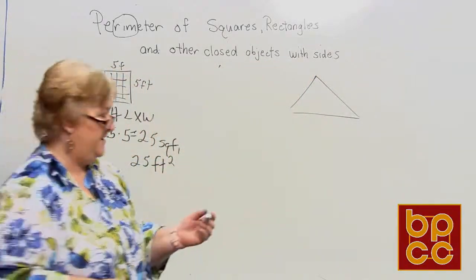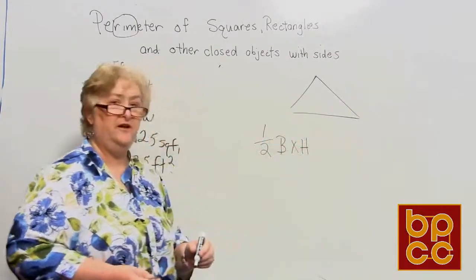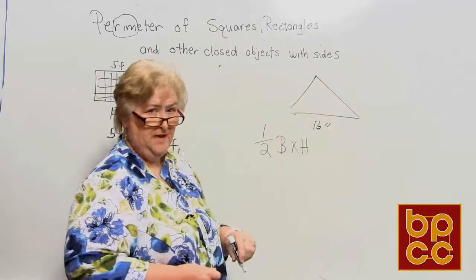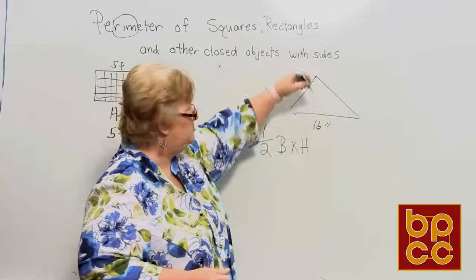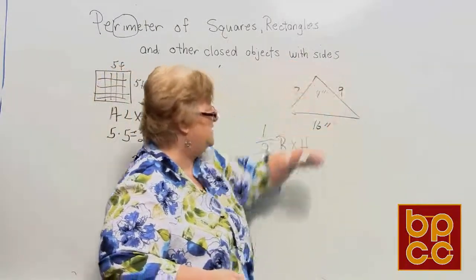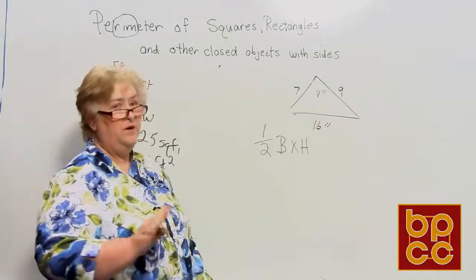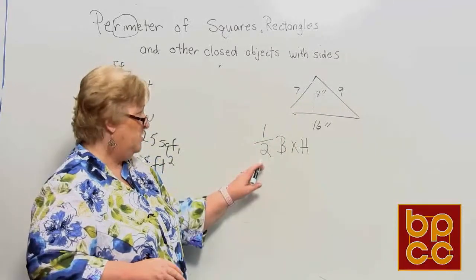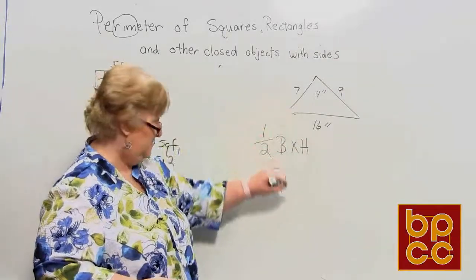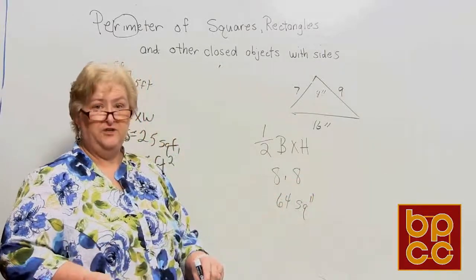The triangle is a little different. The formula for the area of a triangle is one-half times the base times the height, and the result must be in square units. If the base is 16 inches and the height is 8 inches, don't be distracted by other numbers on the sides — we only care about base and height. One-half of 16 is 8, then 8 times 8 equals 64 square inches.